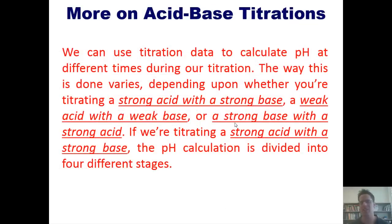We can use titration data to calculate pH at different times during our titration. The way this is done varies depending upon whether you're titrating a strong acid with a strong base, a weak acid with a weak base, or a strong base with a strong acid. If we're titrating a strong acid with a strong base, the pH calculation is divided into four stages.